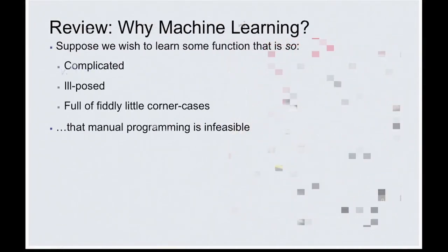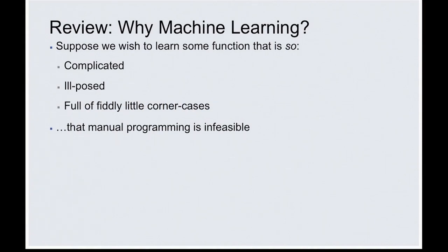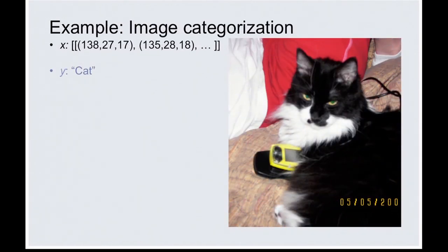Even if you're not exposed to machine learning practitioners daily, you're aware this area exists. I like to think of it as a way to write programs we otherwise don't know how to write. A lot of deep learning demos are focused on images. It's hard to appreciate how amazing it is that we can do image categorization given that the inputs really are just triples of RGB values. If I dropped you in your programming editor and said, 'bool, is this thing a cat or not? Open parentheses, vector of vector of doubles,' your cursor is going to blink there for a while before you figure out where to start writing code.